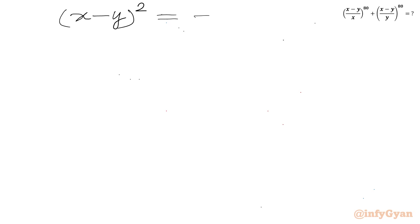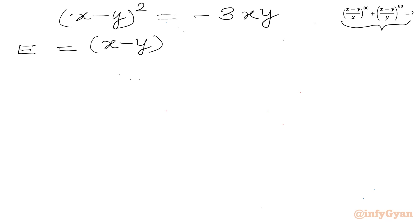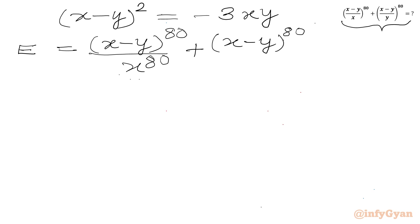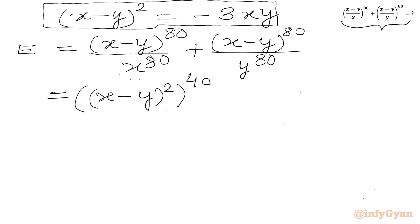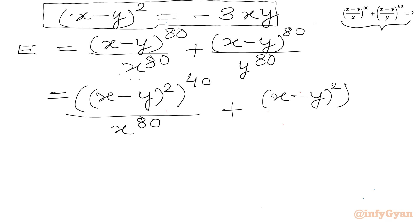So we have (x minus y)² = -3xy as equation 1. Now our expression E equals (x minus y)⁸⁰ over x⁸⁰ plus (x minus y)⁸⁰ over y⁸⁰. We can utilize equation 1 by writing (x minus y)⁸⁰ as [(x minus y)²]⁴⁰, since 2 times 40 is 80. So E becomes [(x minus y)²]⁴⁰ over x⁸⁰ plus [(x minus y)²]⁴⁰ over y⁸⁰.